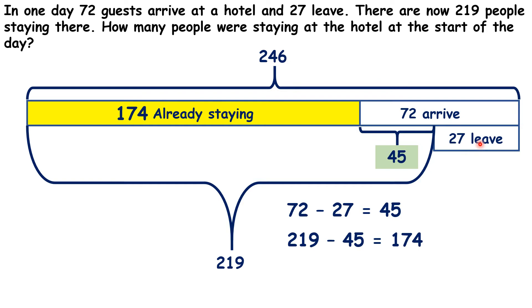Well, they drew the bar for the number of people who left underneath the bar for the number who arrived. That meant they could find the difference: 72 minus 27, which meant they knew that 45 more people arrived than left that day. But because they wanted the total at the start of the day, they then had to take 45 away from 219, which gave them 174 as the number of people who were already staying at the hotel at the start of the day.